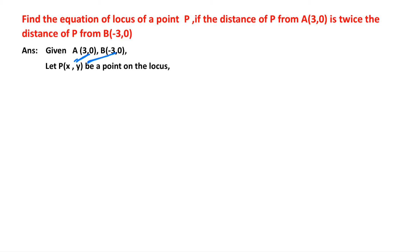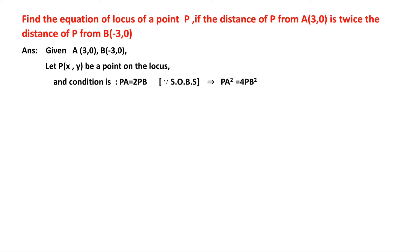We can write this as PA = 2·PB. Squaring on both sides, that becomes PA² = 4·PB². Now we need to find the distance between P and A and the distance between P and B, and substitute into this equation.